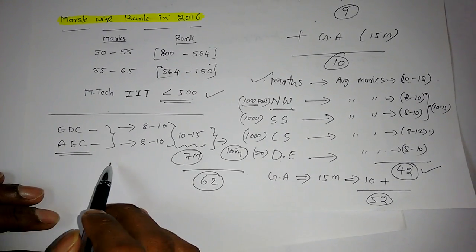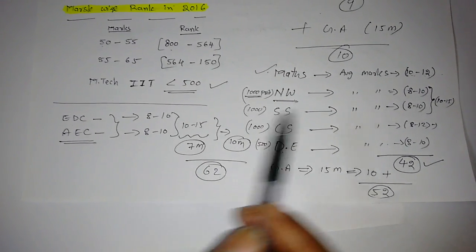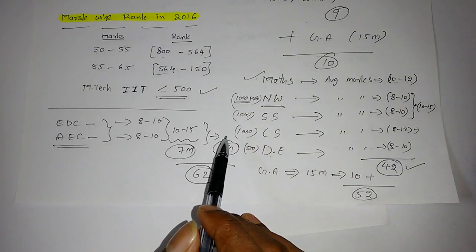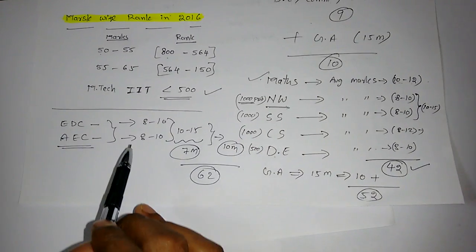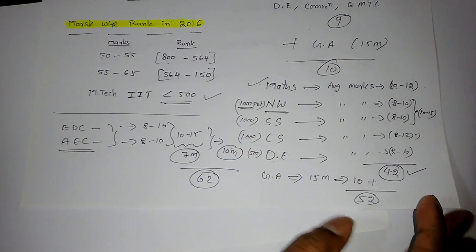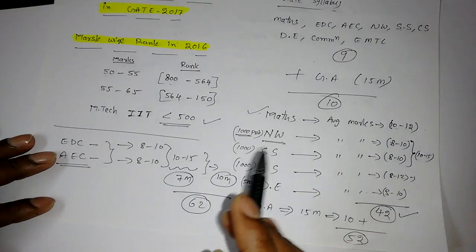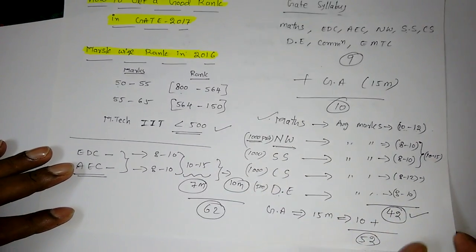If you plan like this, I'm sure you can get at least less than 500 rank. That is about this GATE plan for 2017.